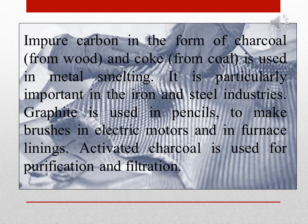Impure carbon in the form of charcoal from wood and coke from coal is used in metal smelting. It is particularly important in the iron and steel industries. Graphite is used in pencils to make brushes in electric motors and in furnace linings.